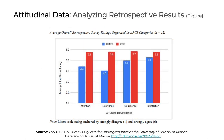Here's another interesting example. This chart is titled Average Overall Retrospective Survey Ratings Organized by the ARCS Categories — Attention, Relevance, Confidence, and Satisfaction — where responses were entered using a six-point scale. Using color coding, it is easy to compare the before and after scores for each area of the ARCS model. We can quickly tell that relevance changed the most and satisfaction the least. The takeaway is that a vertical bar chart with two series can be a great way to showcase retrospective ratings.